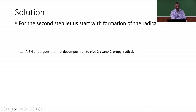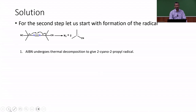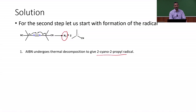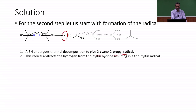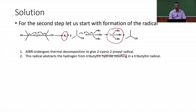In the second step, AIBN (azobisisobutyronitrile) is used. It undergoes thermolytic cleavage because the reaction is heated in benzene solvent. During thermolysis, decomposition of AIBN gives the 2-cyano-2-propyl radical with concomitant loss of nitrogen — nitrogen liberation is the driving force. This radical intermediate then reacts with tributyltin hydride: the Sn–H bond is broken by the radical, giving the tributyltin radical.